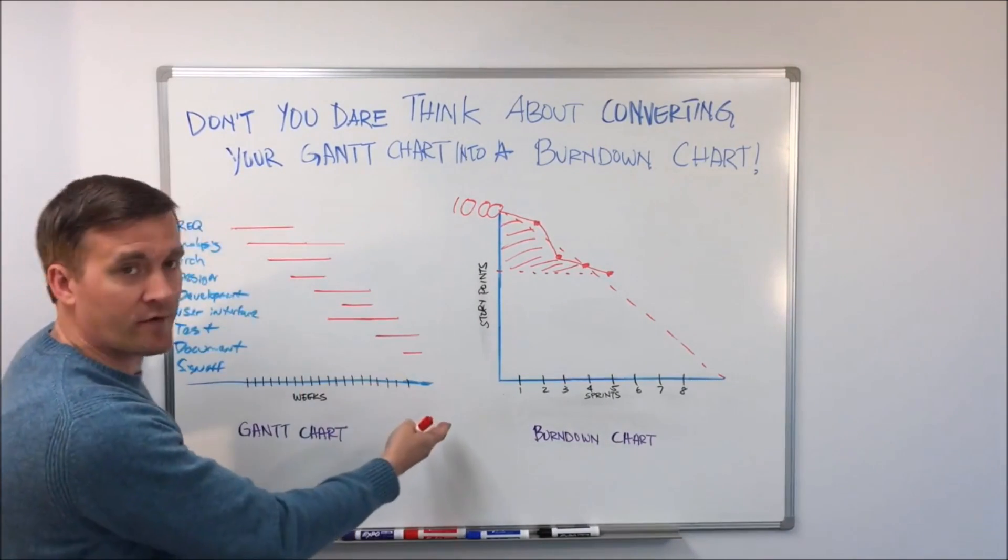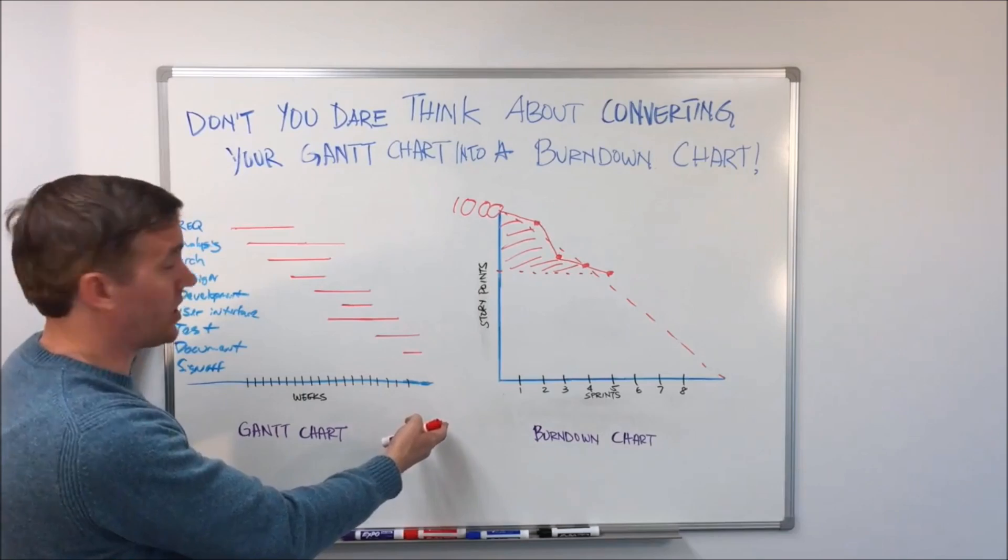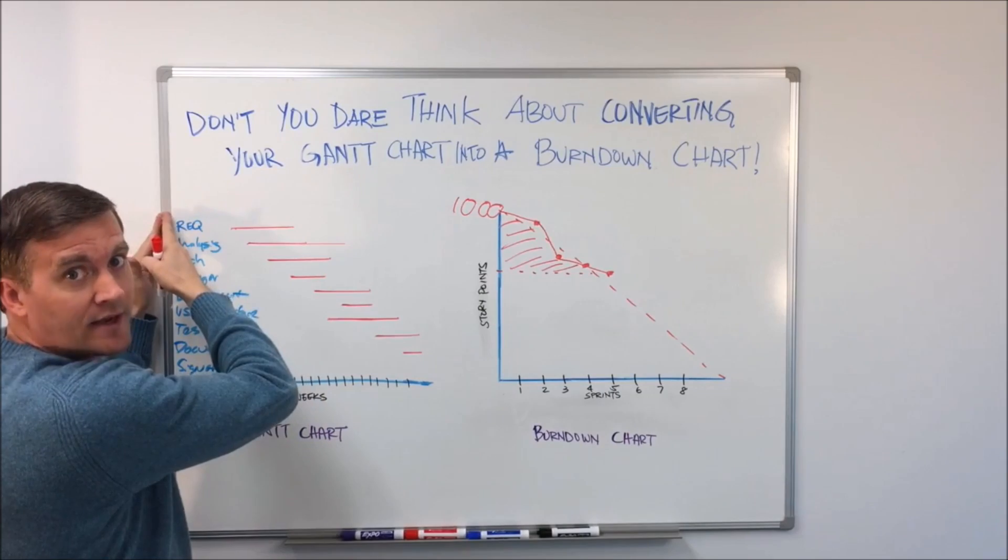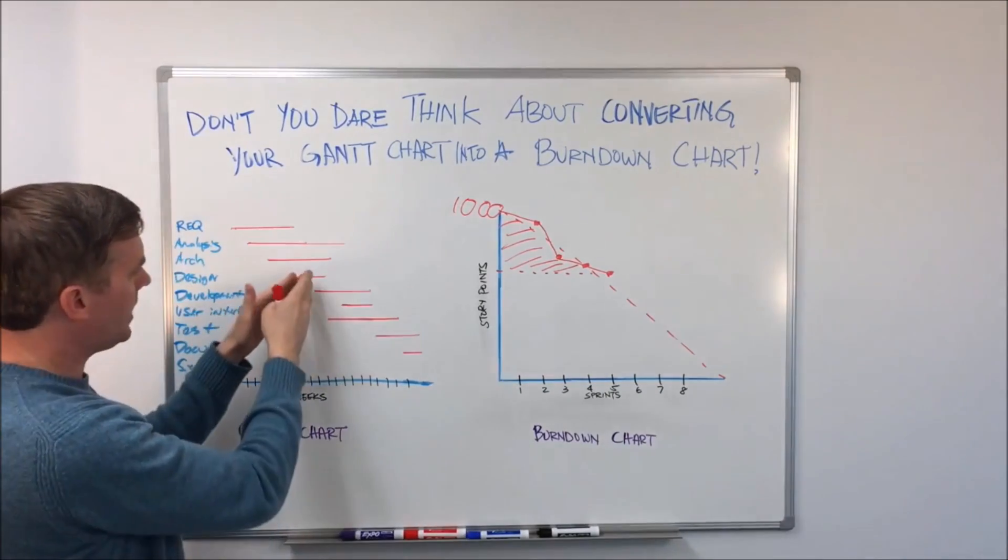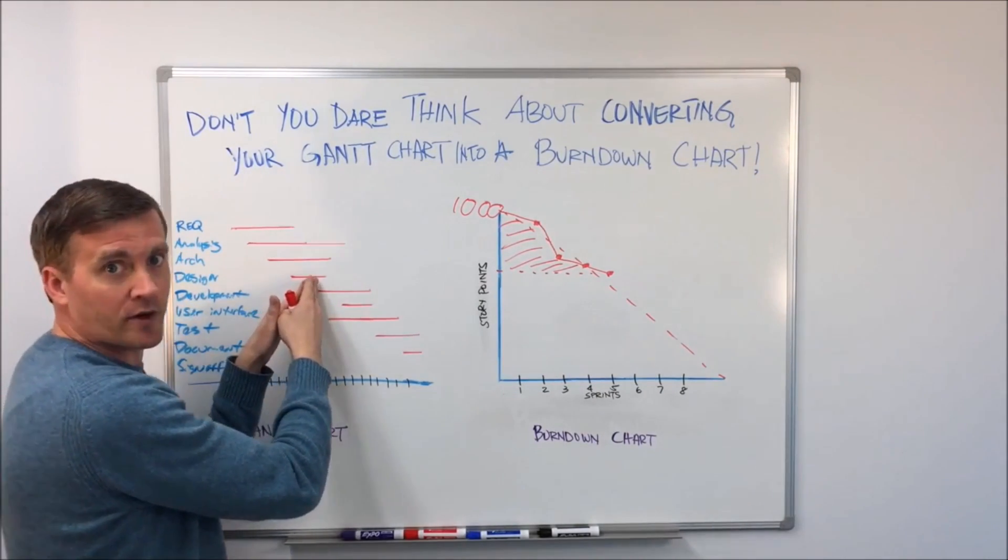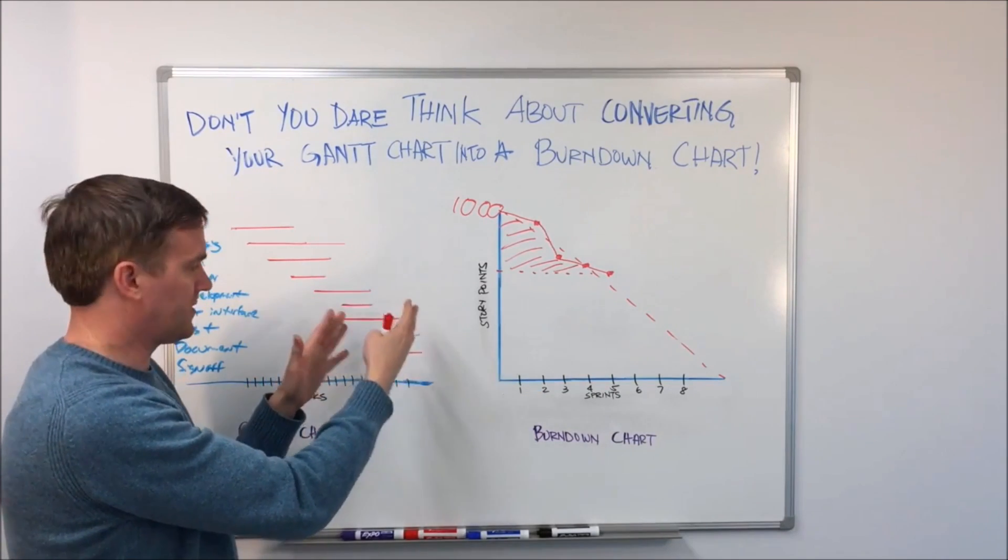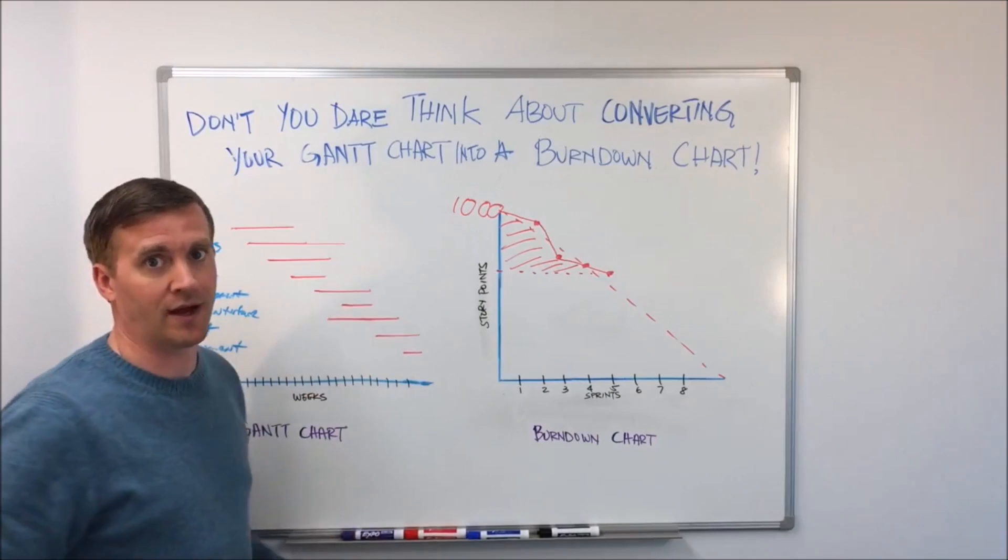In a traditional waterfall project being managed by a Gantt chart, when you get to this same point, all you have is a whole bunch of unfinished work and a lot of documentation. You don't really start getting into finishing the work until you're in the development, the testing, and the deployment phases of a traditional project.